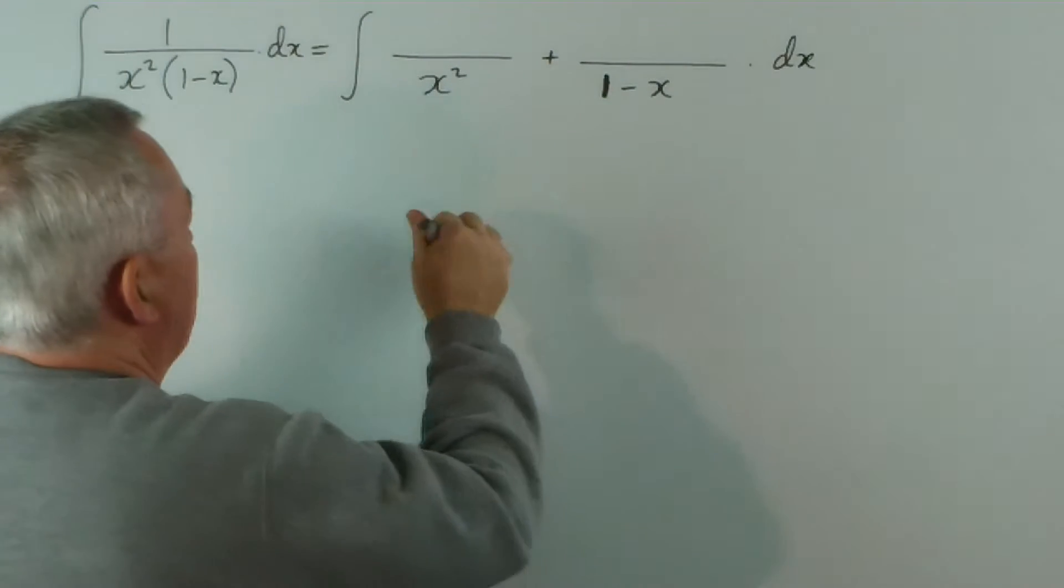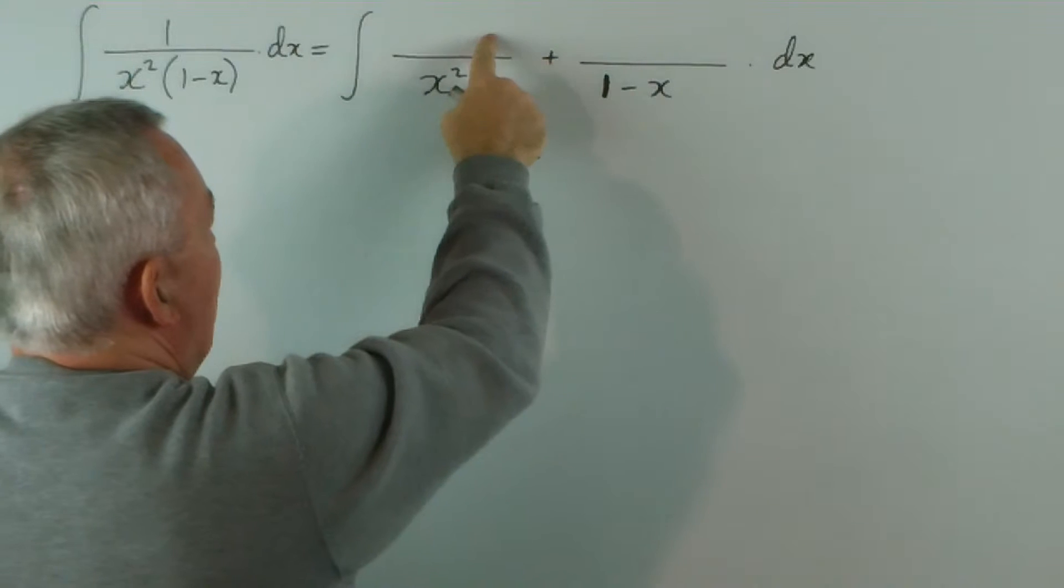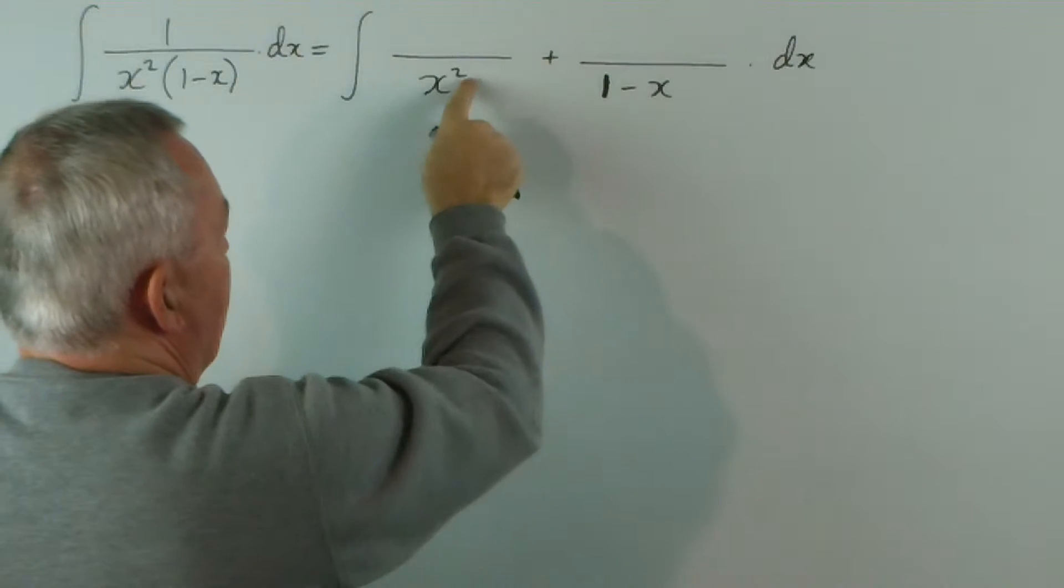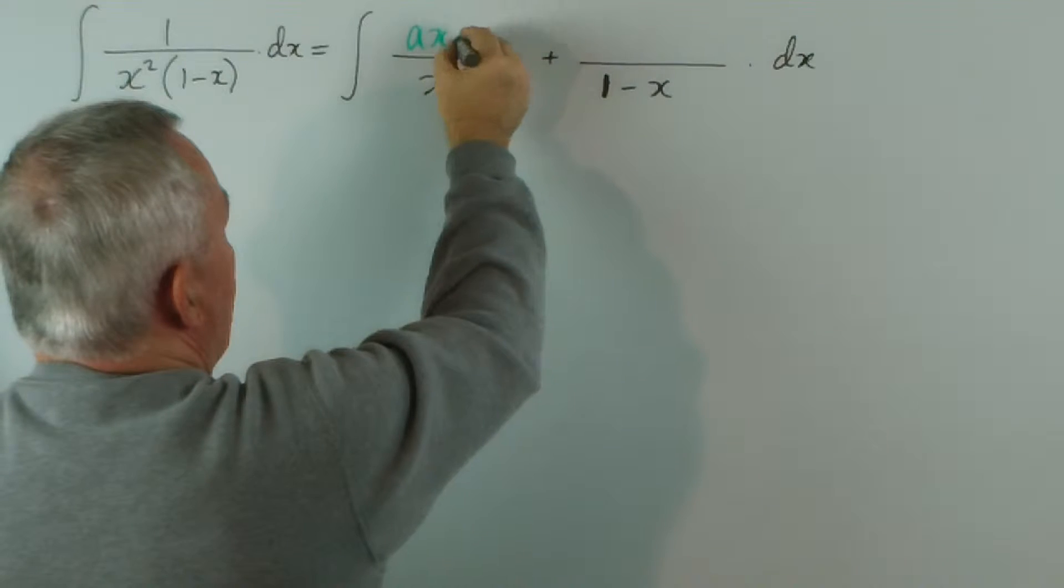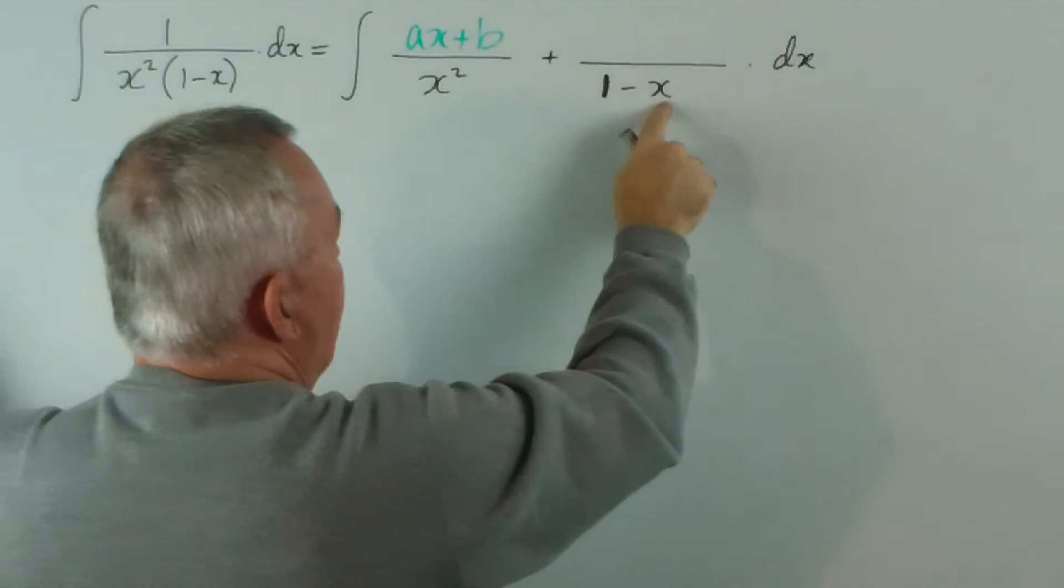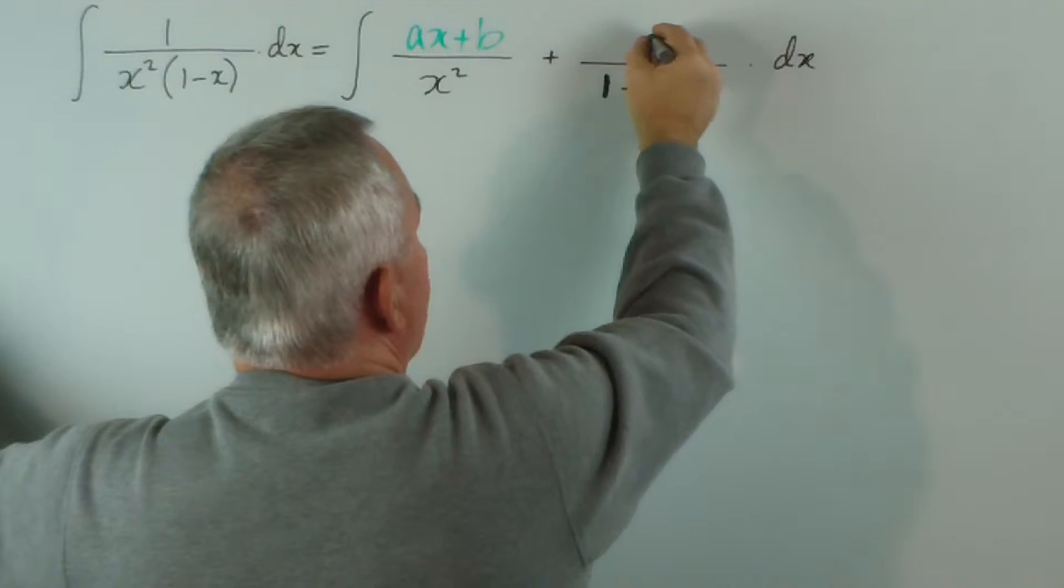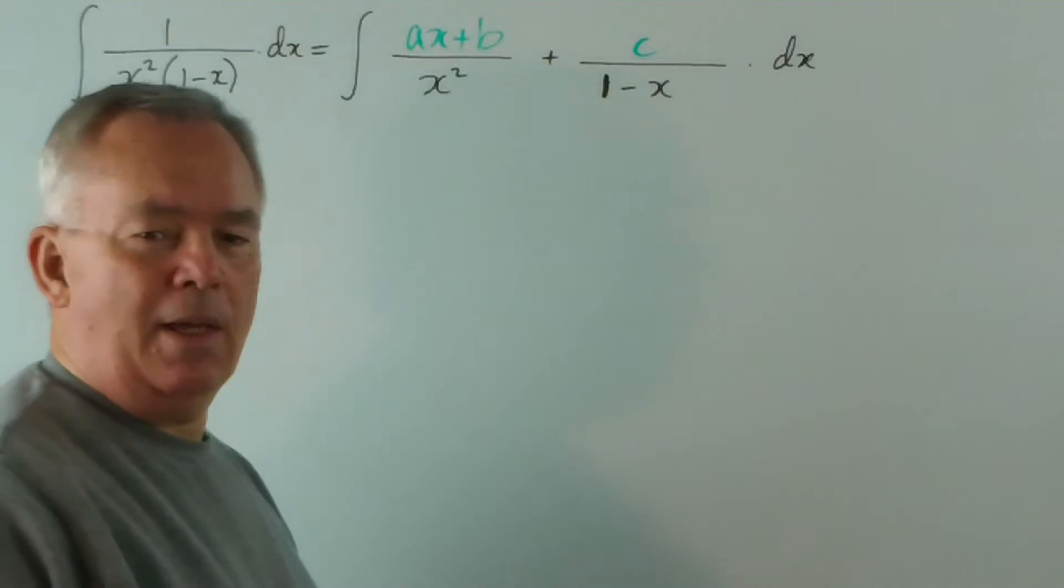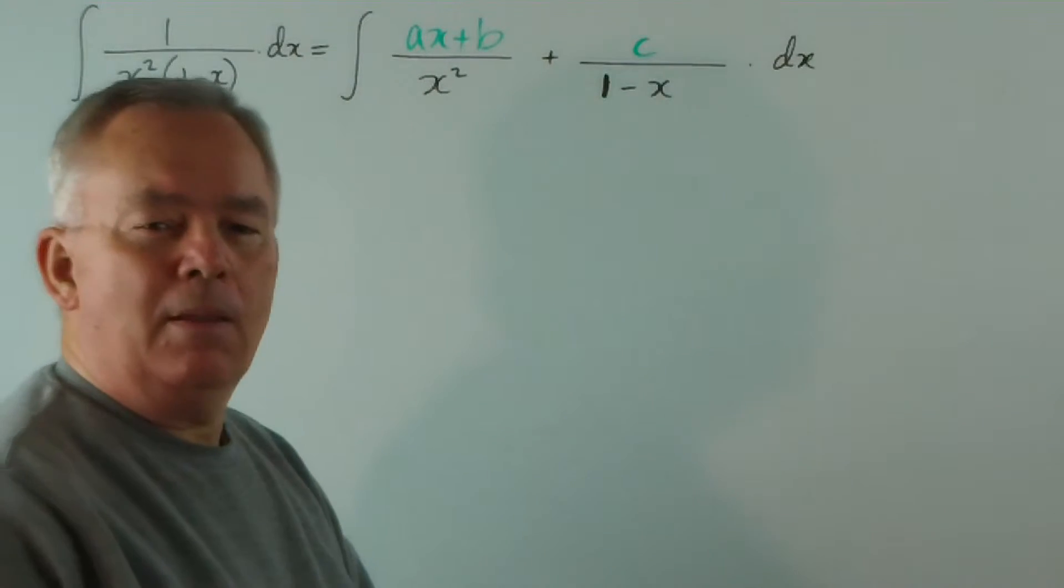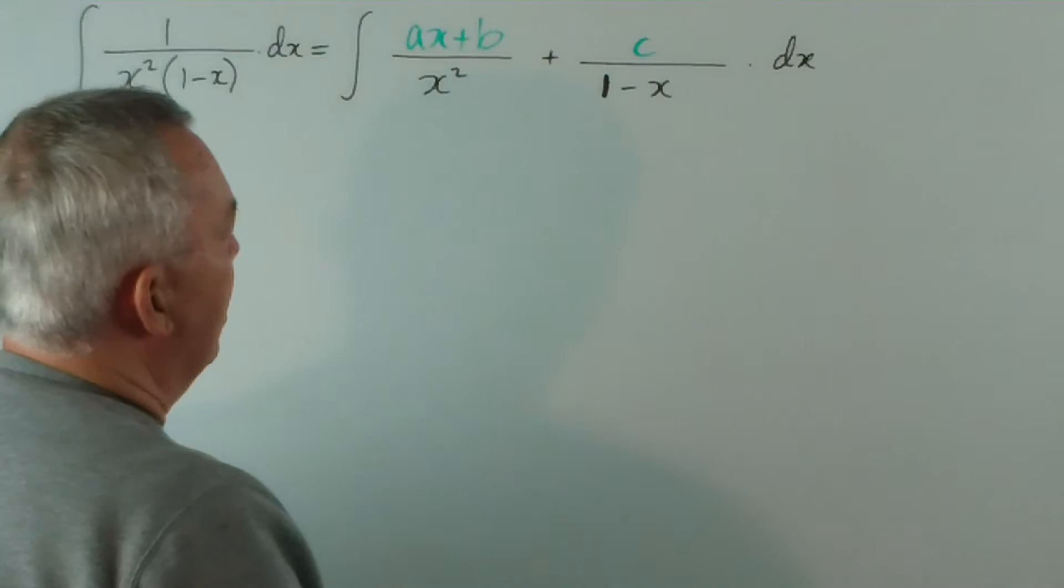We would imagine writing a polynomial of one order less than this. So one order less than two is one, so let's do ax plus b. And this has order one, so we just put a constant, c. And let's work out what we need on the top to make this relevant.